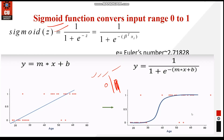The S-curve is called the sigmoid function. In logistic regression, we use the concept of a threshold value which defines the probability of either 0 or 1. Values above the threshold go into the category of 1, and values below the threshold go into the category of 0.